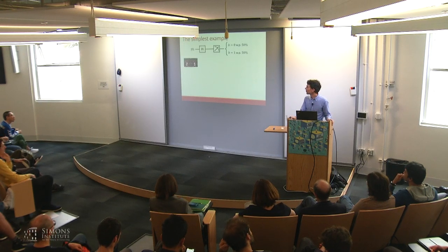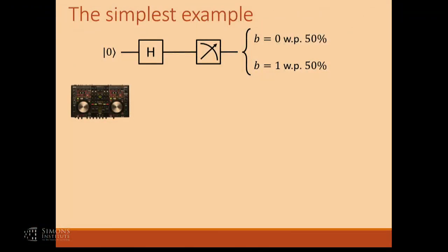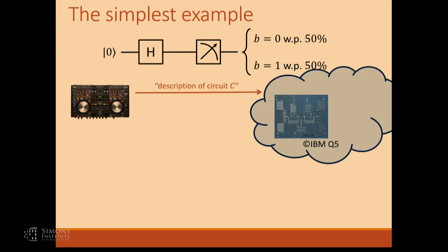To summarize what's going to be going on here: this is me with my laptop — the entity we call the verifier in interactive proofs — interacting with the IBM quantum computer. I have a circuit that I'm interested in. I give a description of the circuit to the IBM quantum computer, and it returns to me an answer. It'll say it got zero; I run it another time and it says one; I run it multiple times and reconstruct the statistics.